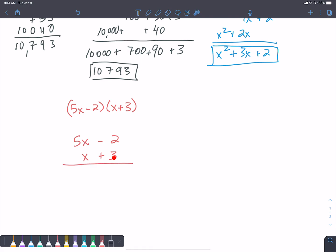So 3, positive 3 times negative 2 is a negative 6. Positive 3 times 5x is a positive 15x. x times negative 2, again, not going in this column. x times negative 2 is going to be minus 2x. And then lastly, x times 5x, that's going to give me 5x squared.